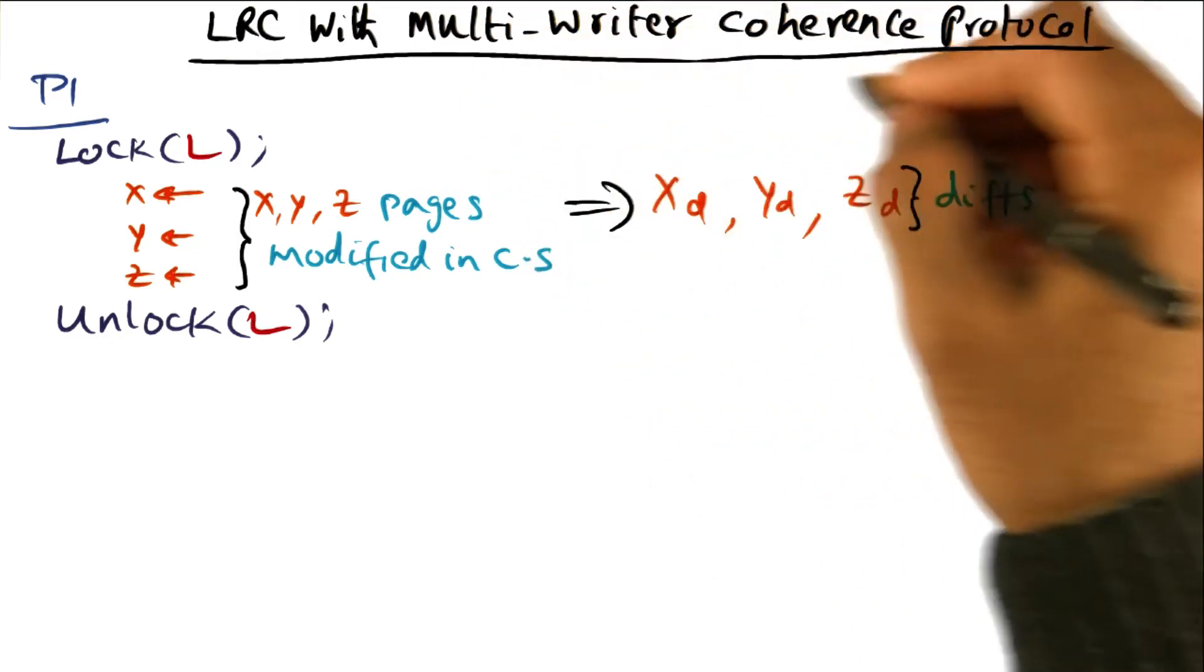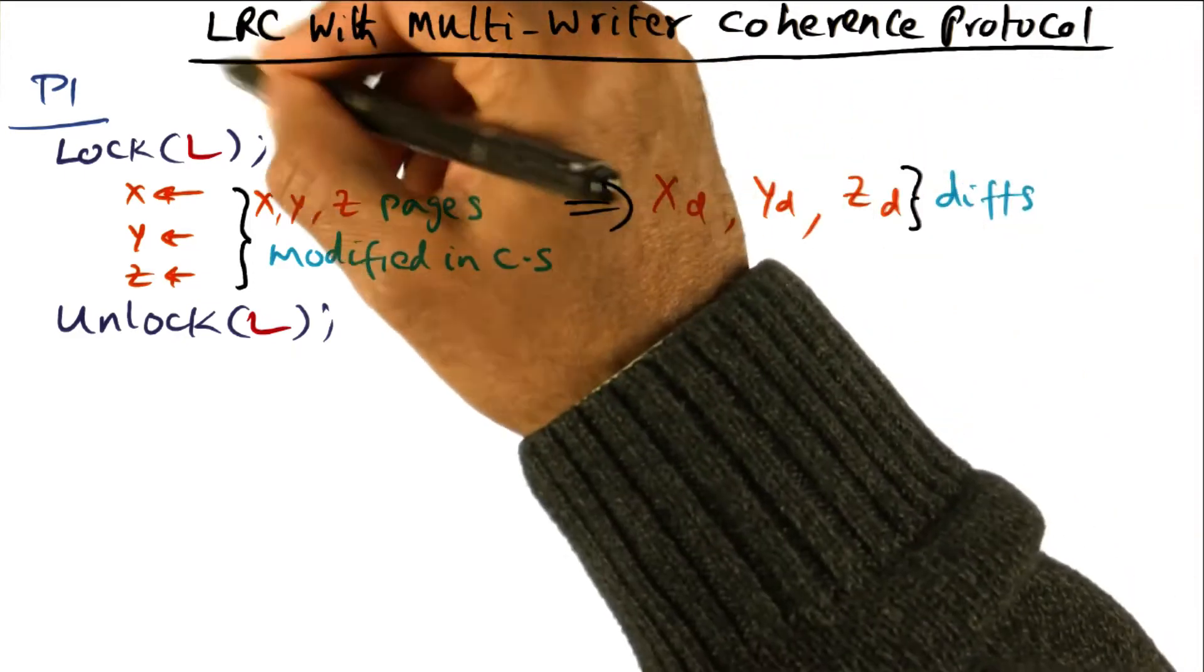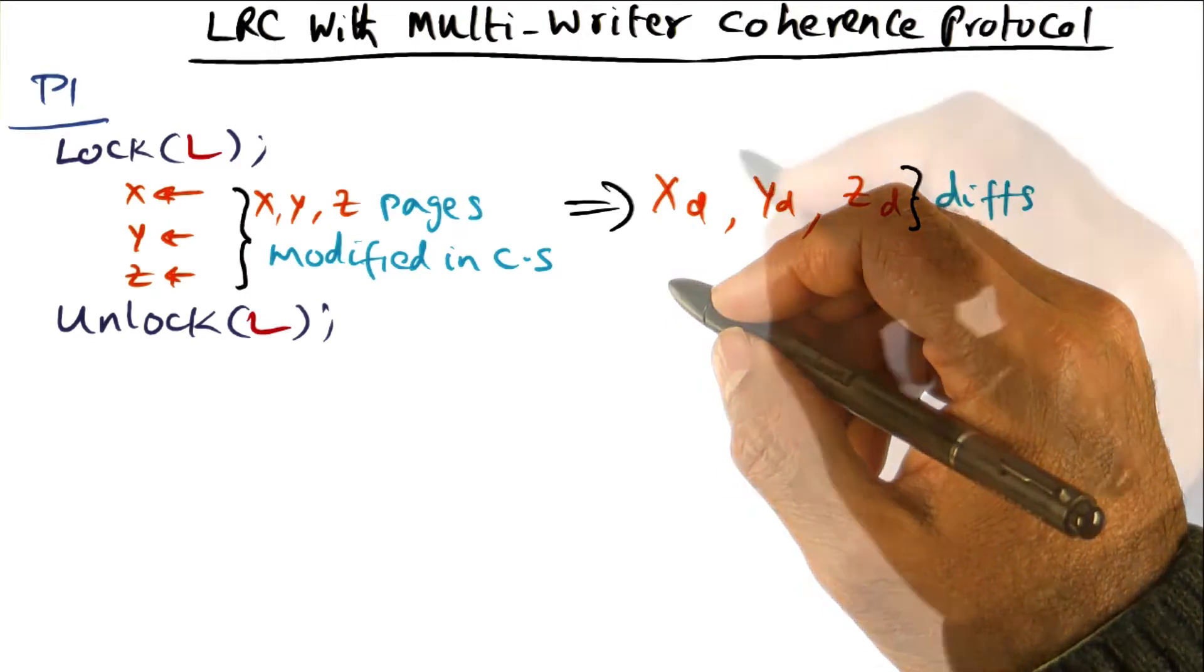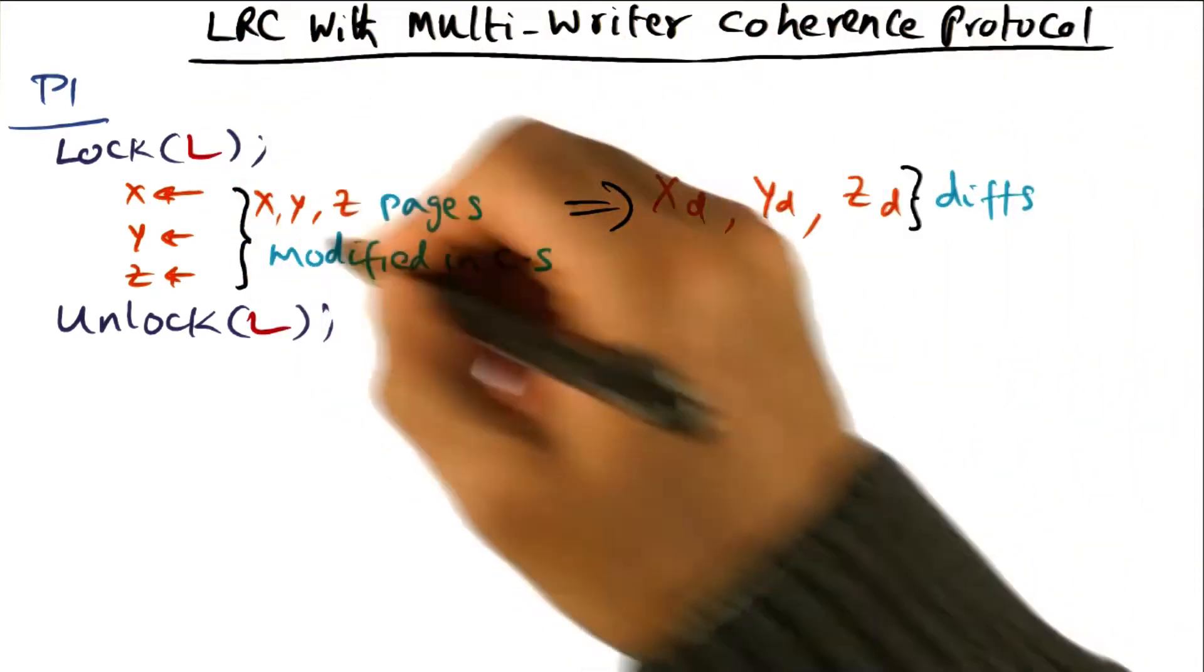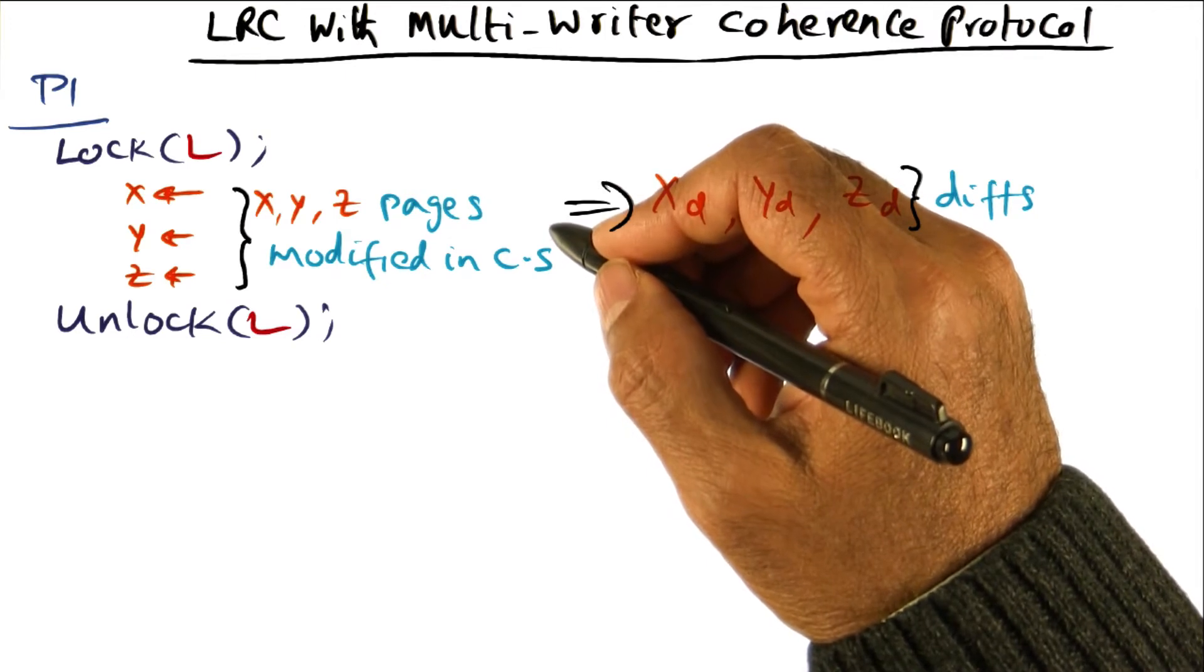We're going to see how this multiple writer coherence protocol works. In particular, we're going to use that in concert with lazy release consistency. The background for what I'm going to describe is covered in the paper that is assigned for you, which is the Treadmarks paper.